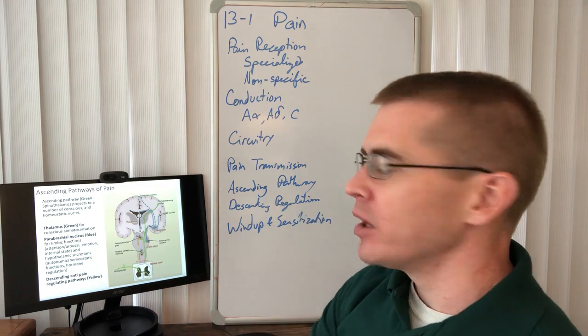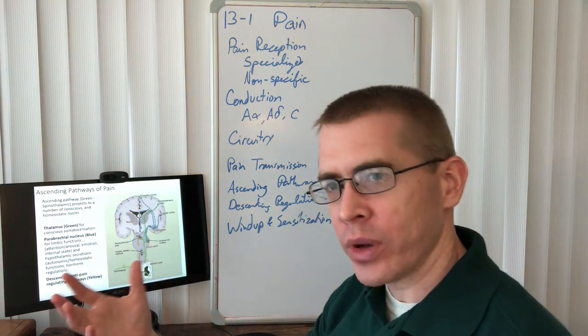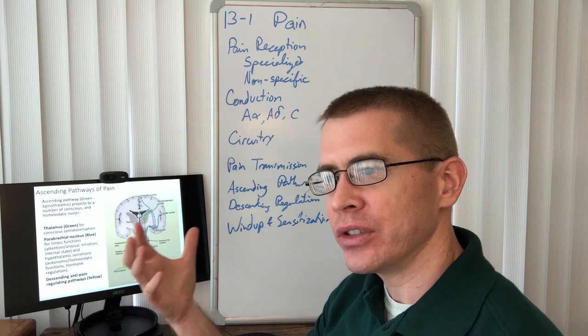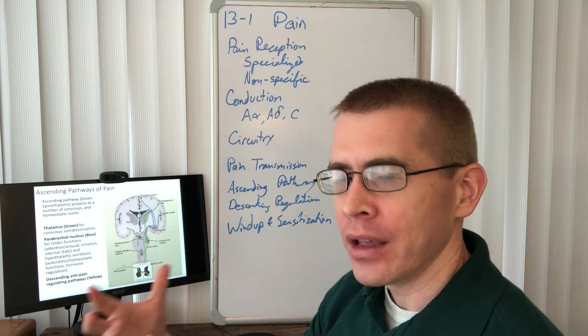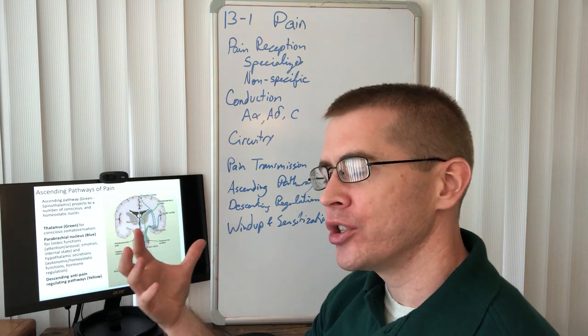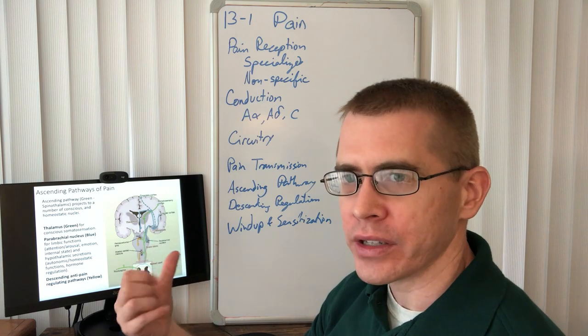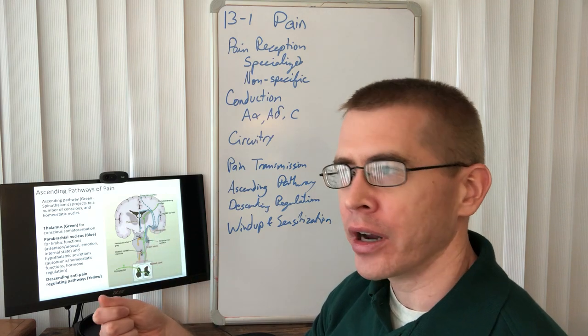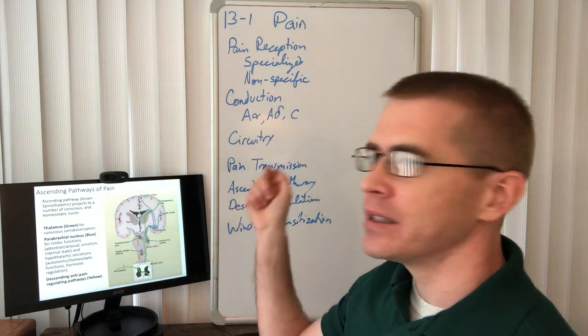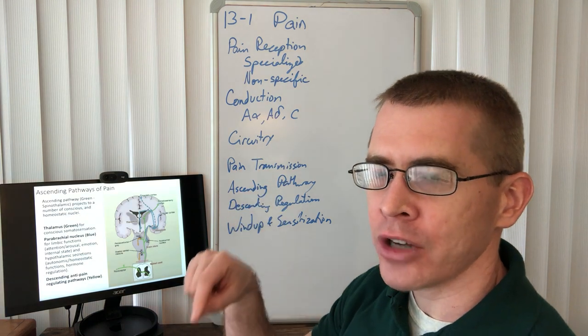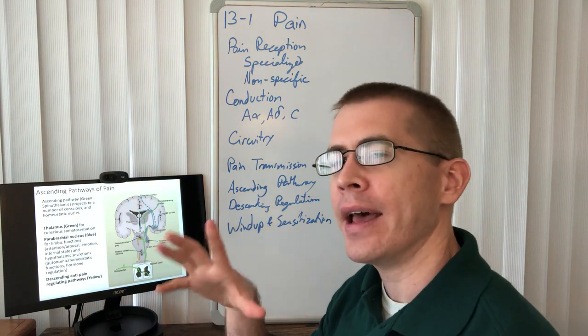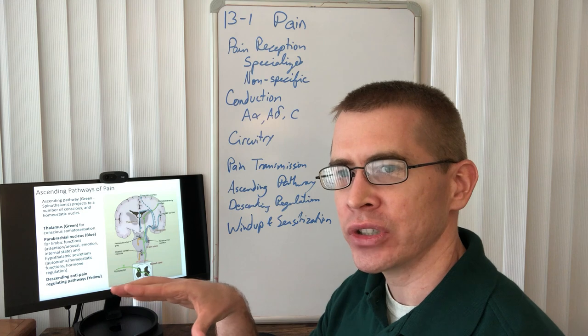But the point here is that this information is bypassing the cortex. And so you are not consciously controlling these autonomic responses to stimuli. So that's very interesting. You think of your output as a response to a cognitive thought process, but most of the stuff that you're doing as a response to stimuli is things you cannot control.